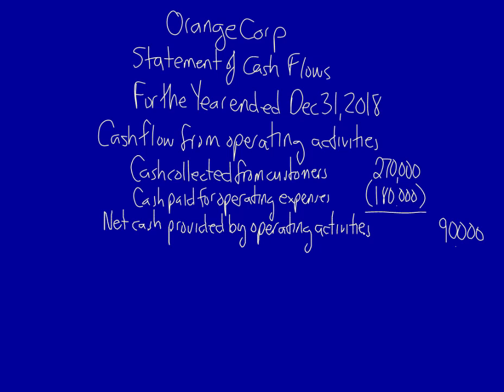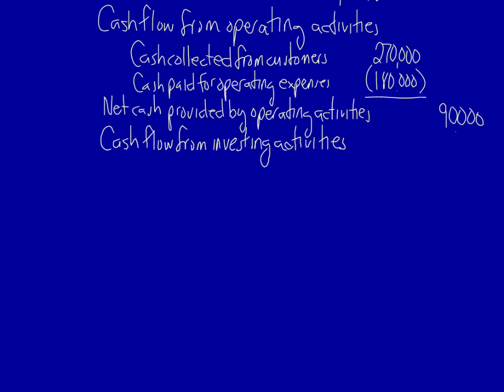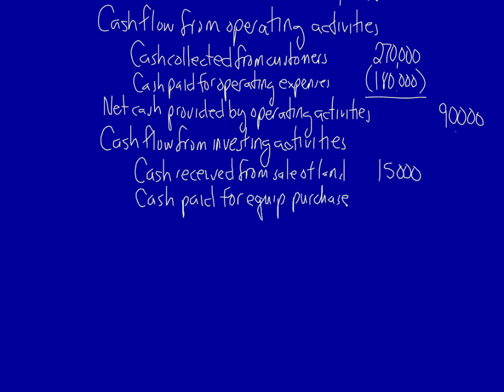Now let's move on to investing activities. We have two line items here: cash received from the sale of the land, which is an inflow, and cash paid for the equipment purchase. The net amount is negative, so we have net cash flow used in investing activities.